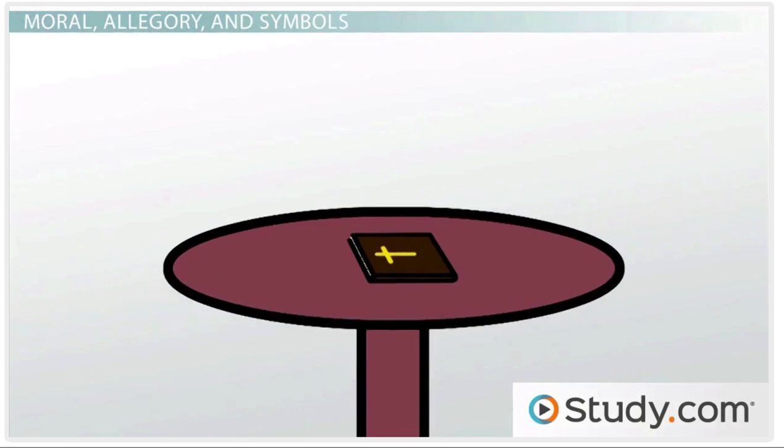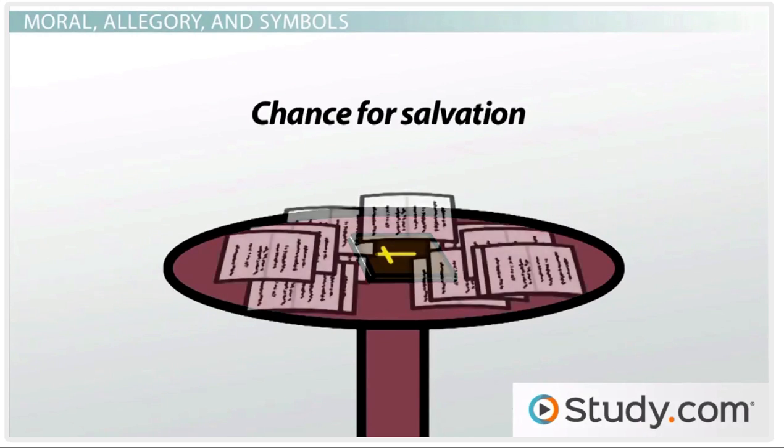Of course, Tom's Bible represents the other side of that, the chance for salvation. But in his final moments, Tom realizes he left it under his mortgages, under the evidence of his corruption, where it cannot help him.